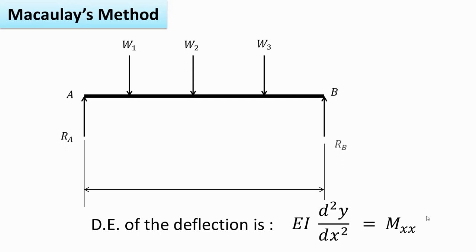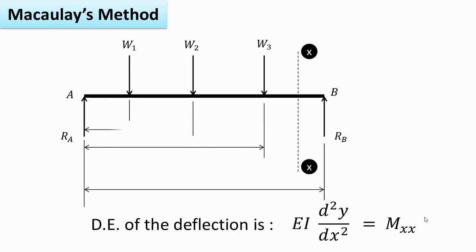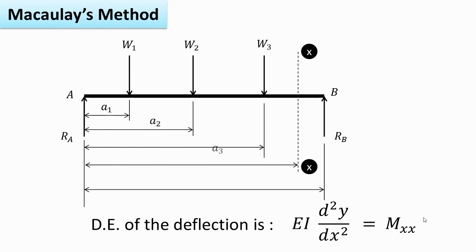In this video we will see Macaulay's method for finding out slope and deflection. Here we have considered a simply supported beam. The arrangement of the beam is as shown in the figure.